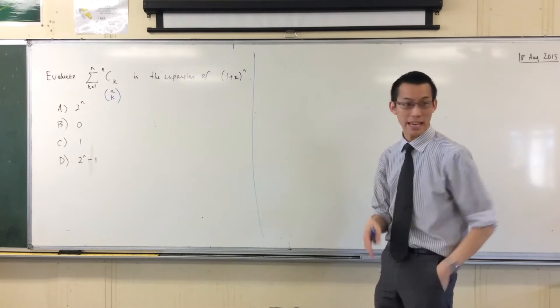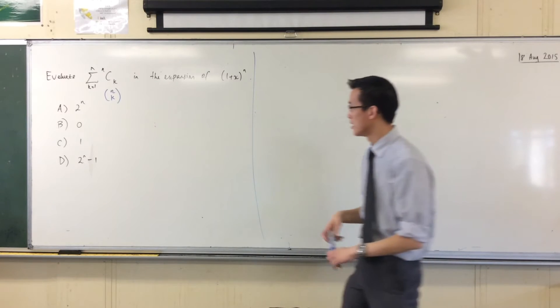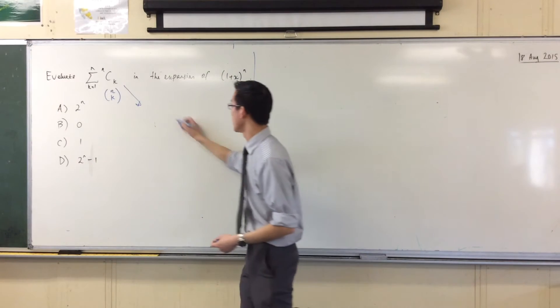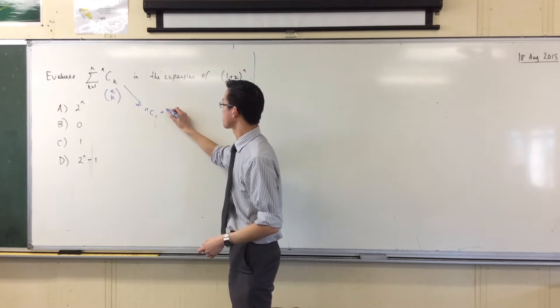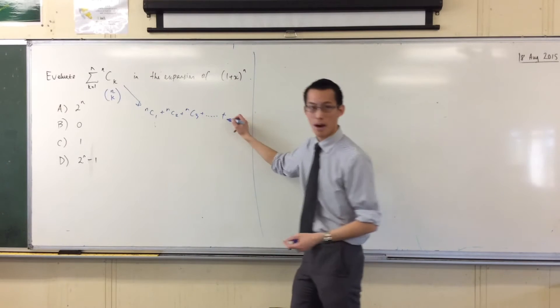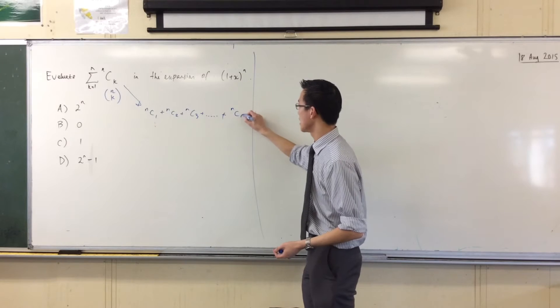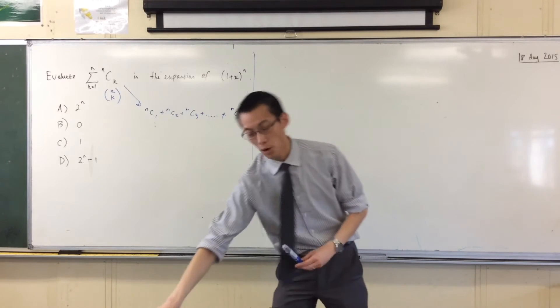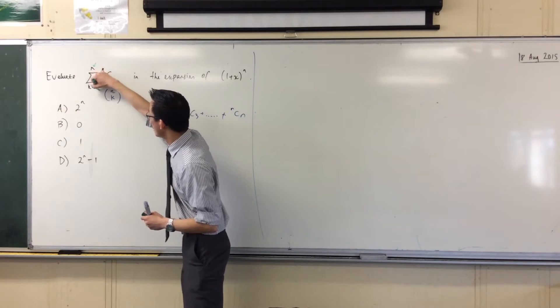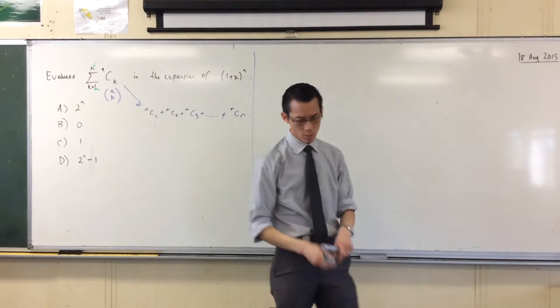So that would be nc1, nc2, nc3, nc4, all the way up to ncn. That's what we're actually trying to do. It's worth probably just drawing that out as a strategy, right? That's nc1, nc2, nc3, all the way up until ncn. You've got your first term here and your last term there.